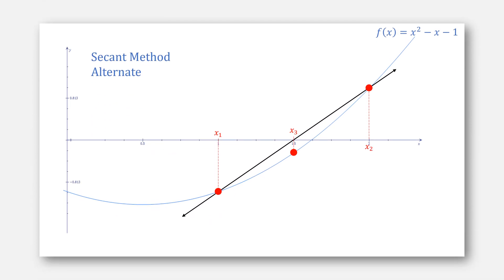Let's look at secant method, but from a different angle. x3 we can write as the sum of one-half of x1 plus one-half of x2. x4 can be written as the sum of one-fifth of x2 plus four-fifths of x3.